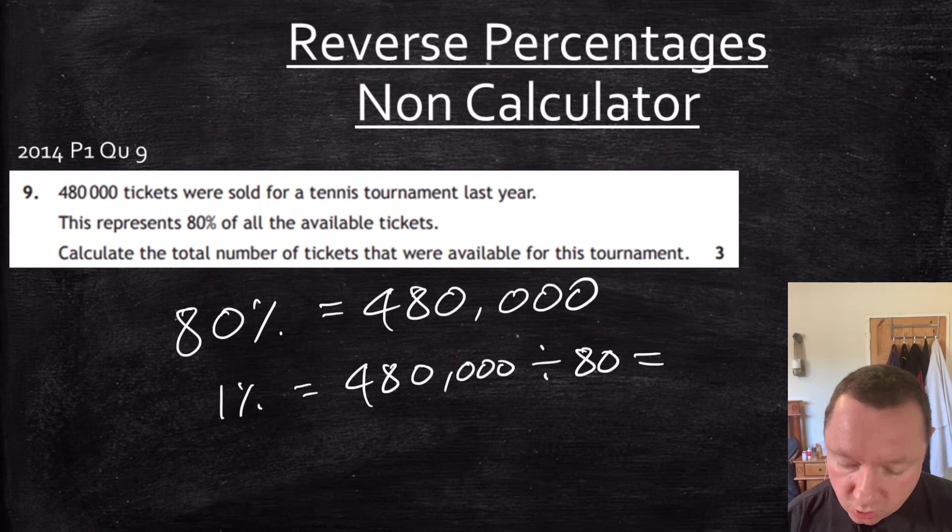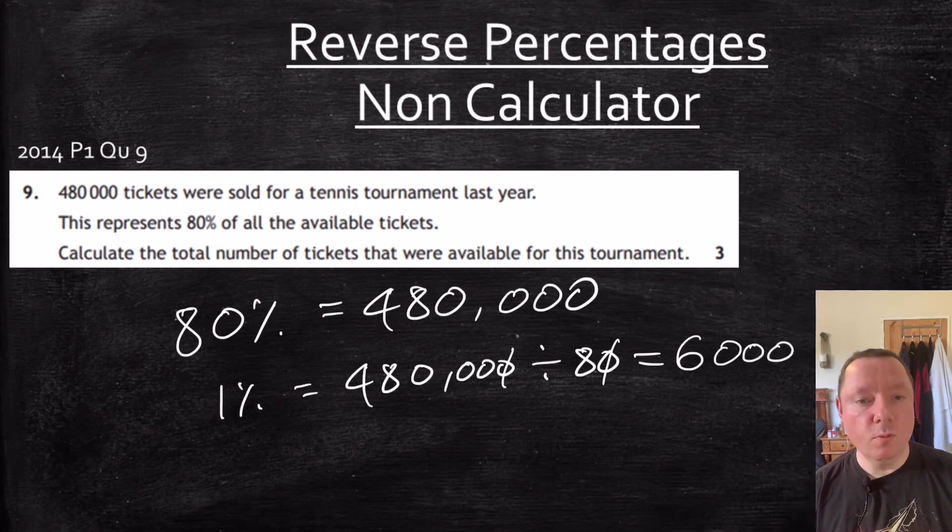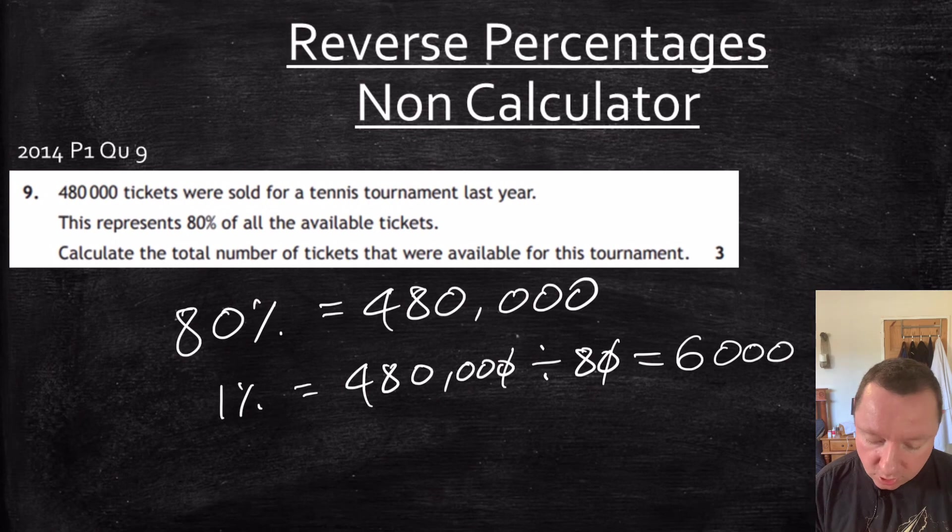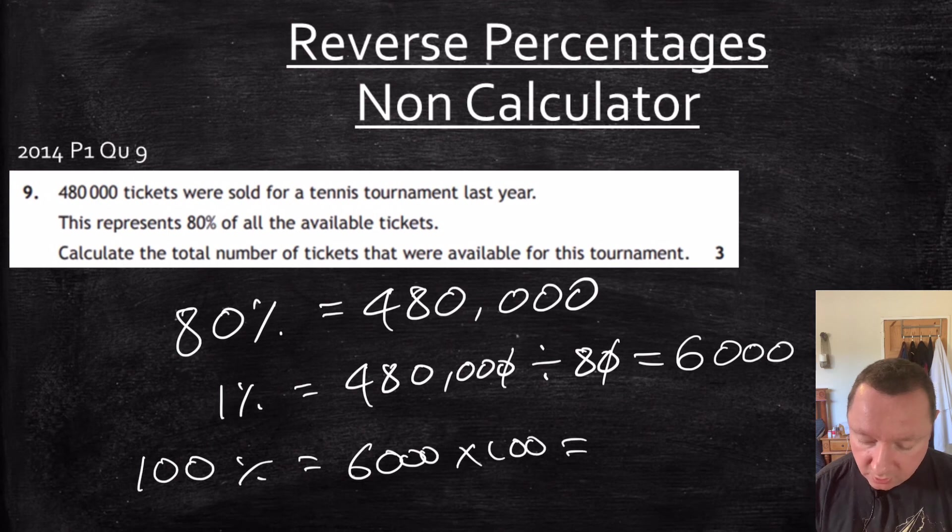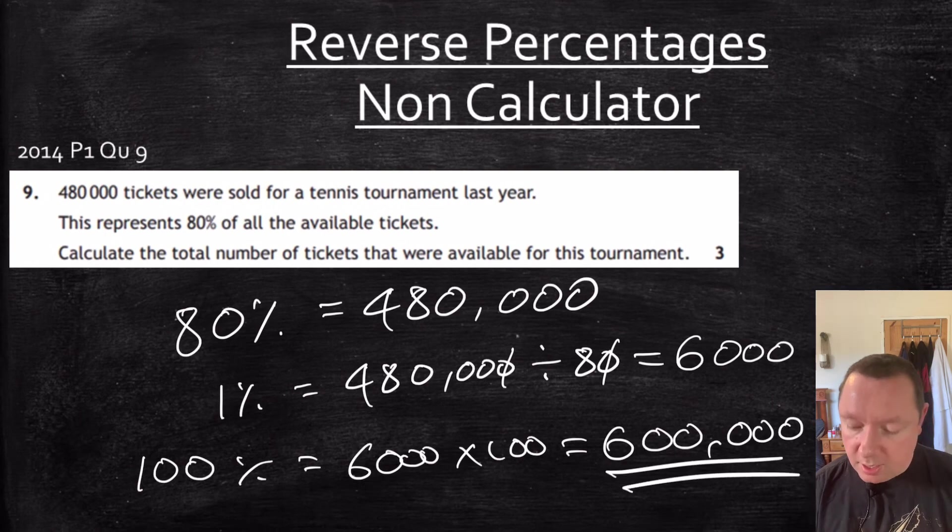So I can knock a zero off straight away. 8 into 6 is 48. 1, 2, 3 zeros left over. So I've got 6,000 for 1%. And therefore, 100% just times them by 100. Making sure I get all my zeros in. 600,000. And there we are.